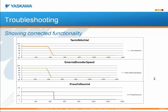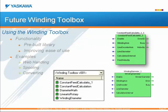There is a winding toolbox in the works for winding and web-tensioning applications. More on this to follow in coming months as Yaskawa incorporates more function blocks. The functionality of this toolbox will allow web handling, spooling, and converting applications to make use of pre-built PLC open functions for the MP2000 IEC series controllers to help speed up program development. Function blocks include a winding diameter, linear to rotary, diameter math, and the constant feed calculation.